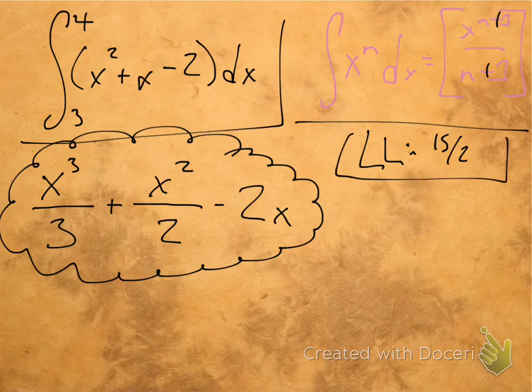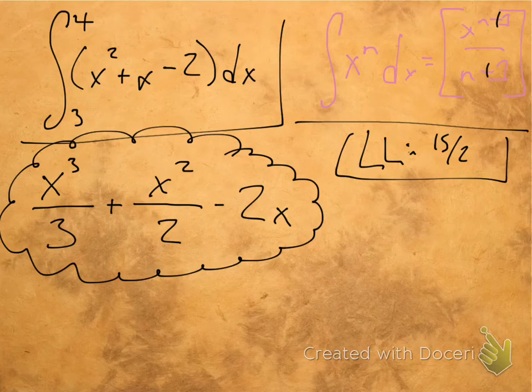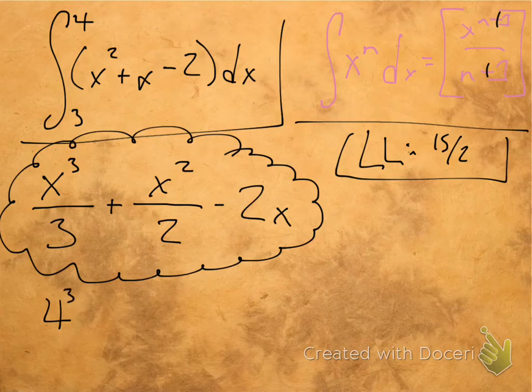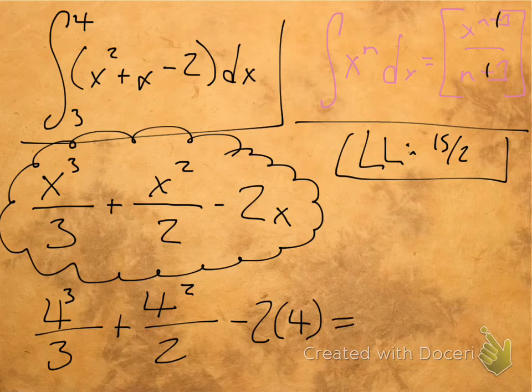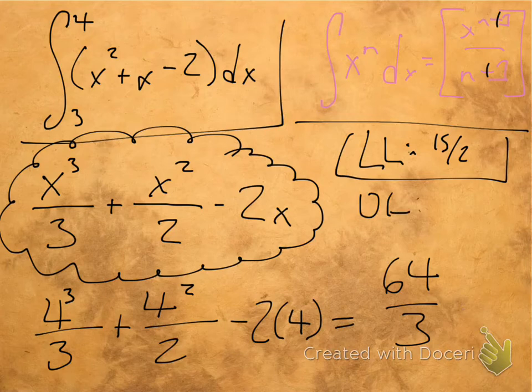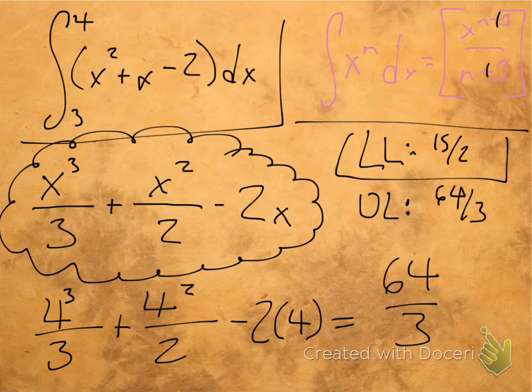Okay, that's great. So we have that knowledge. Now let's go ahead and do our upper limit of integration here, which is 4. So we're going to have 4 cubed over 3 plus 4 squared over 2 minus 2 times 4. And we're going to wind up and we evaluate this at 64 thirds. Okay, so we have our upper limit over here at 64 over 3.